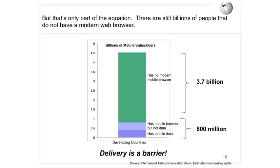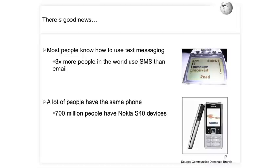The second barrier is delivery. When we talk about 4.5 billion mobile subscribers, even if we address cost, we're only really looking at about 800 million people. But there are also 3.7 billion people that have fairly basic phones with no modern mobile browser at all. This is what we're calling a delivery barrier. The cost issue was a cost barrier; for 3.7 billion people, we have a delivery barrier.